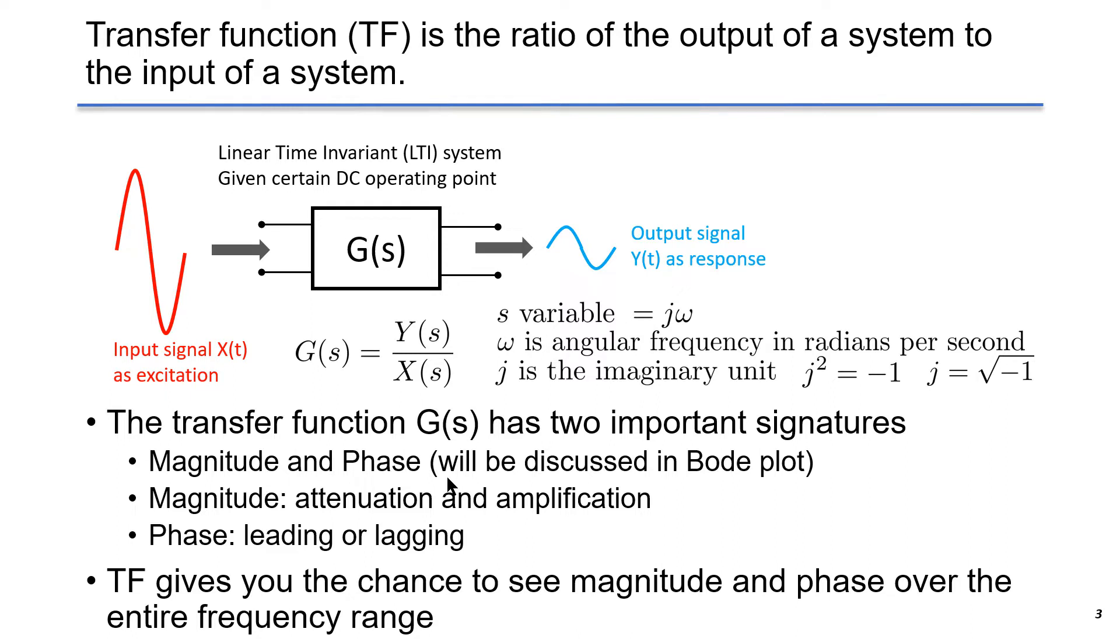The transfer function G of S has two important signatures, magnitude and phase. They will be discussed later in the following slides. The magnitude focuses on attenuation and amplification, and phase, we will pay attention to leading or lagging. When the phase is leading, that means the output Y of S is leading input X of S, and the transfer function G of S has positive phase. When it's lagging, that means the phase is negative. The transfer function gives you a chance to see the magnitude and phase over the entire frequency range, so you have a better idea about the system AC response in the frequency domain.